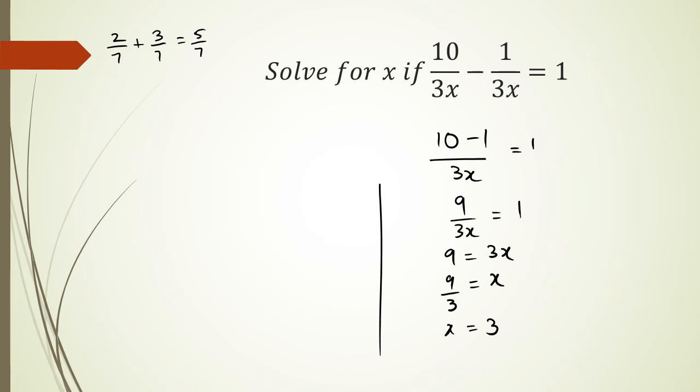The other way I'd have done this is also just going (10 - 1)/(3x) = 1, 9/(3x) = 1. Because 9 and 3 have a common factor of 3, I can simplify to 3/x = 1. Cross multiplying, I get 3 = x. That's another way of doing this as well.